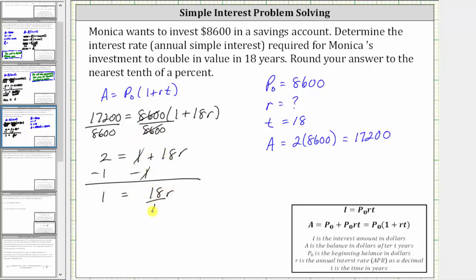Now we divide both sides by 18. Simplifying, 18 divided by 18 is one. One times R is R. We have R equals one divided by 18.